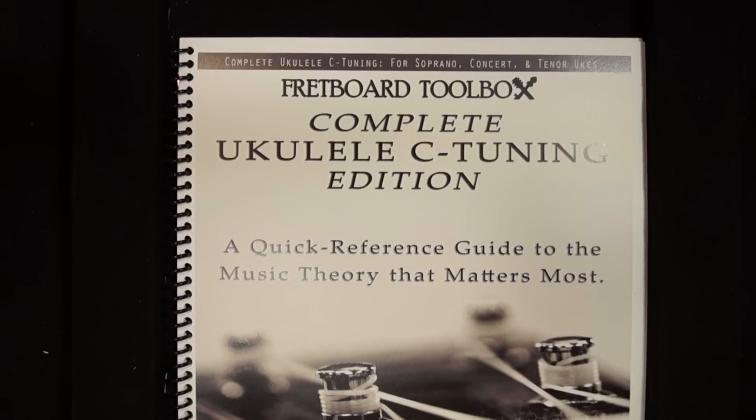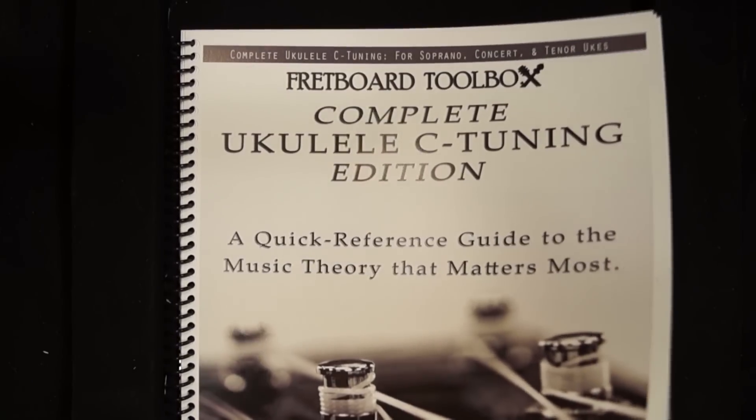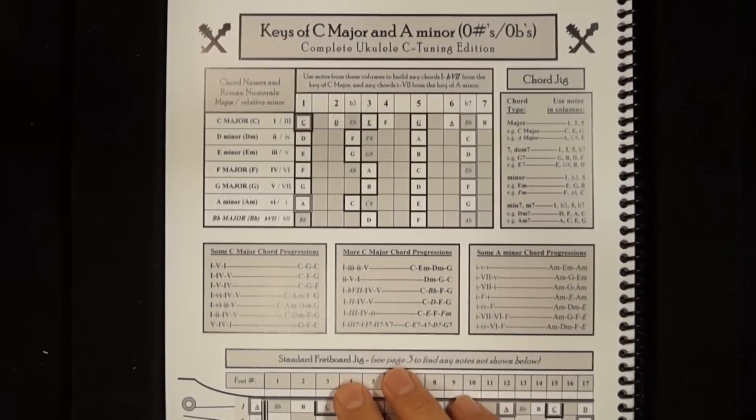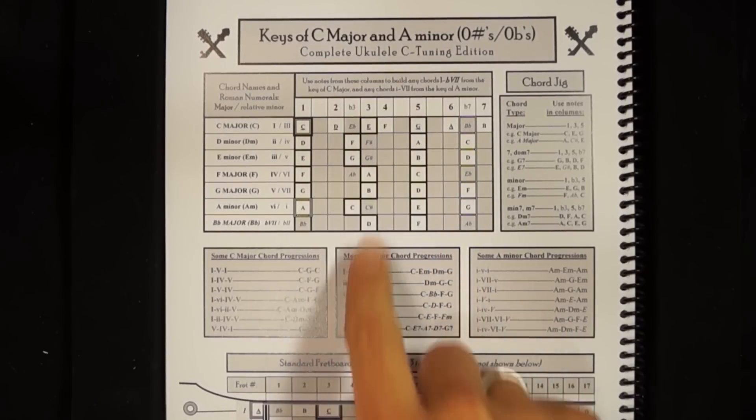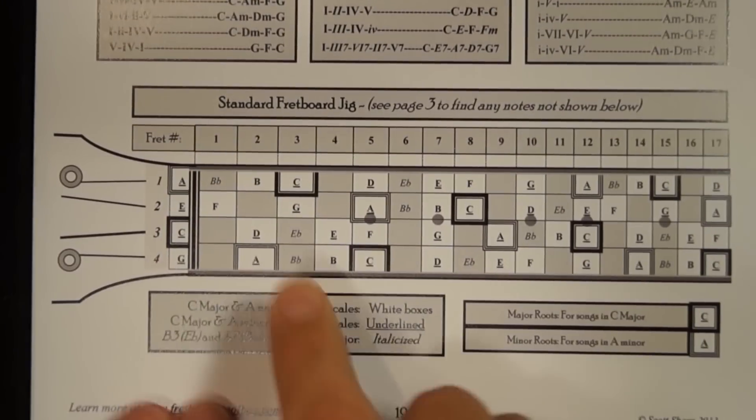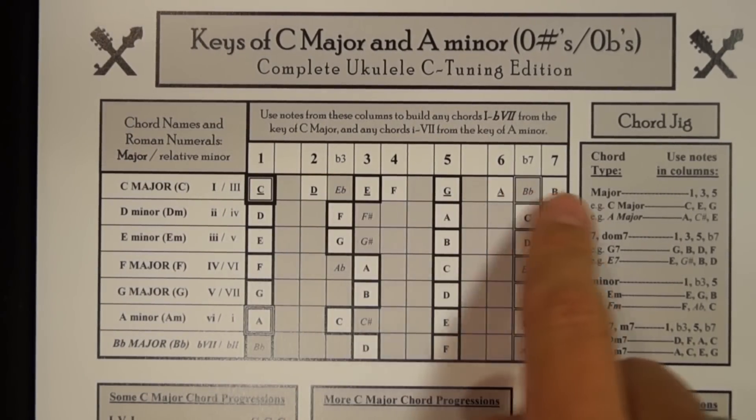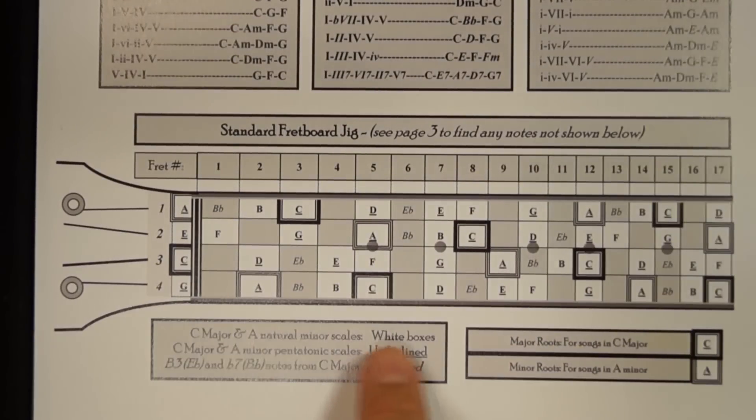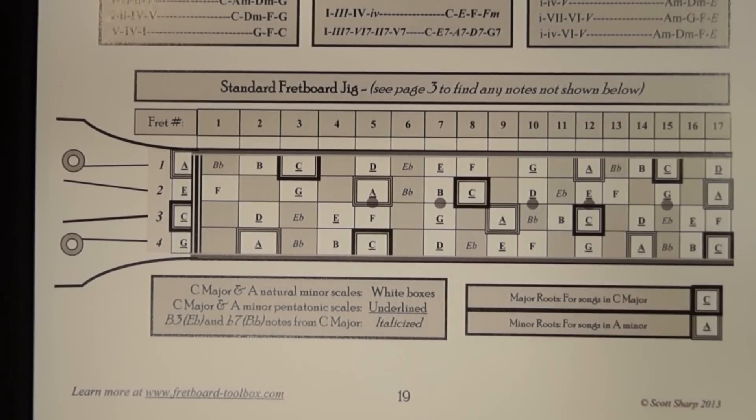To see how to visualize C scales all over the fretboard, we're going to use a Fretboard Toolbox Complete Ukulele C tuning edition. First we'll look at page 19, which is the key of C major page. In a previous video I showed you how to build these chords using these notes. Today what we're going to look at is on the fretboard jig, we're going to look at the notes in white boxes because those notes in white boxes are the major scale. So major scale notes are the notes found in white boxes.